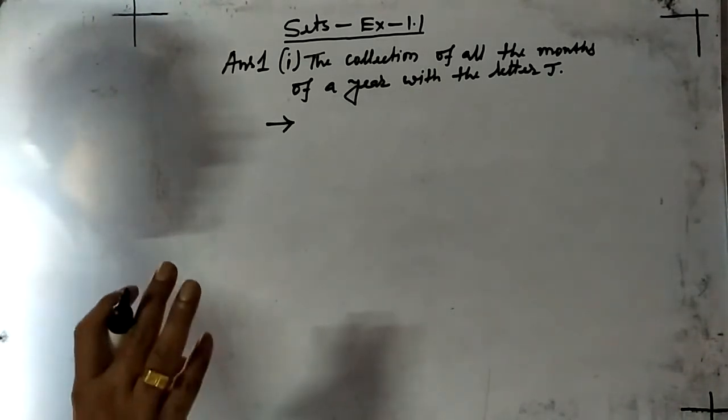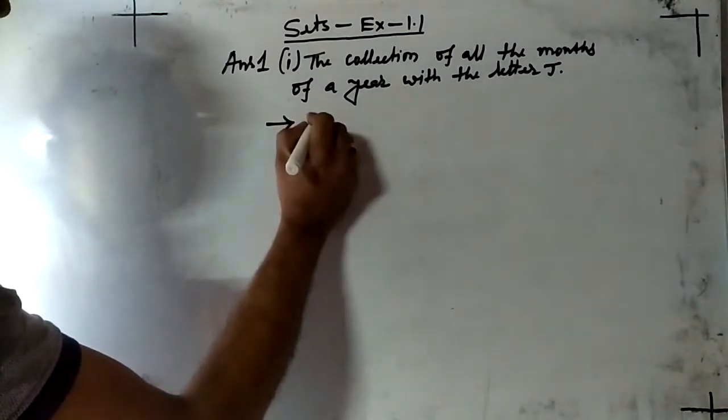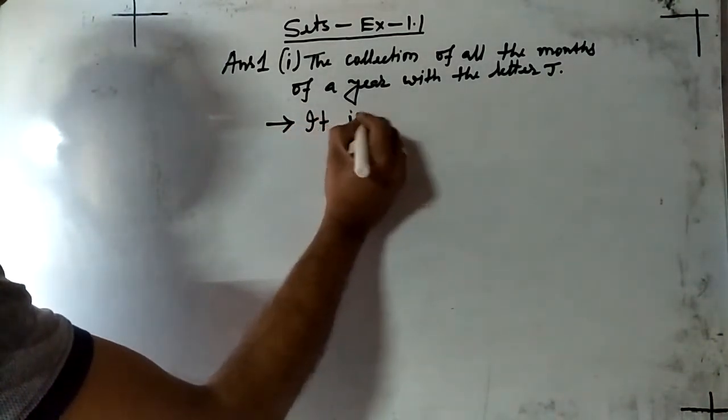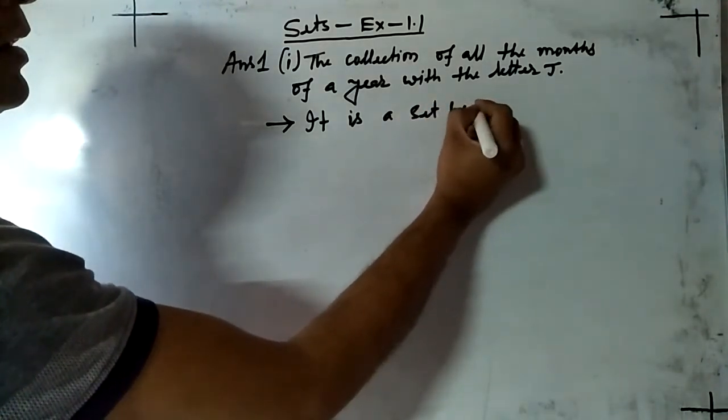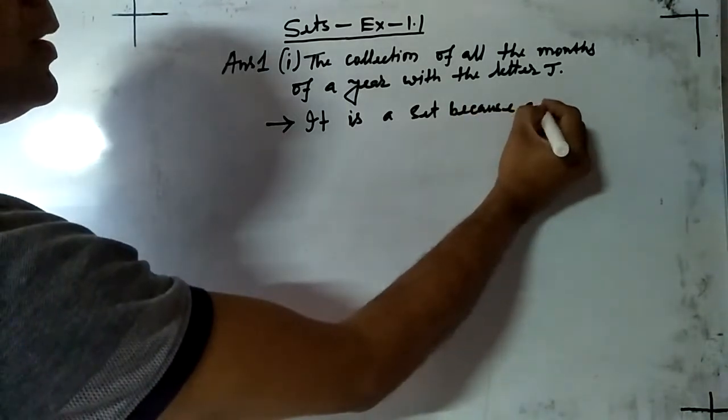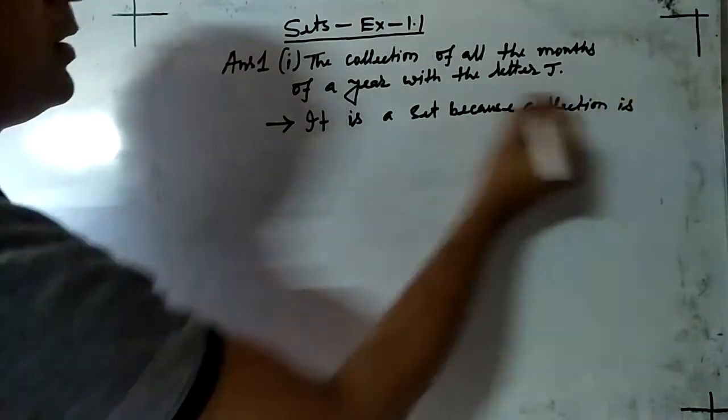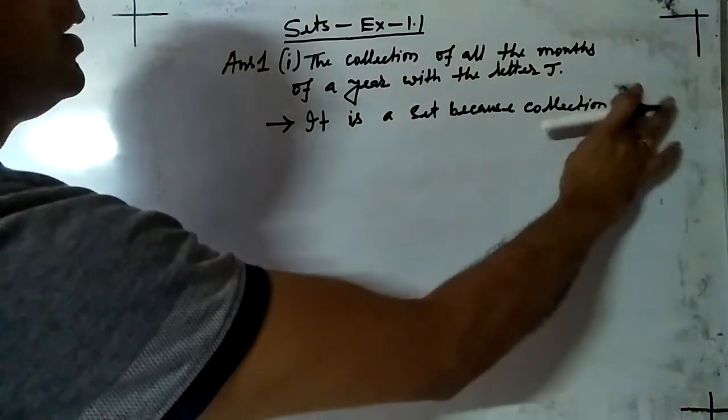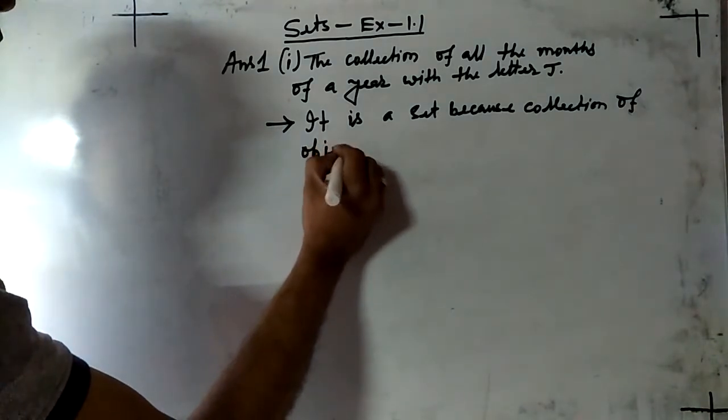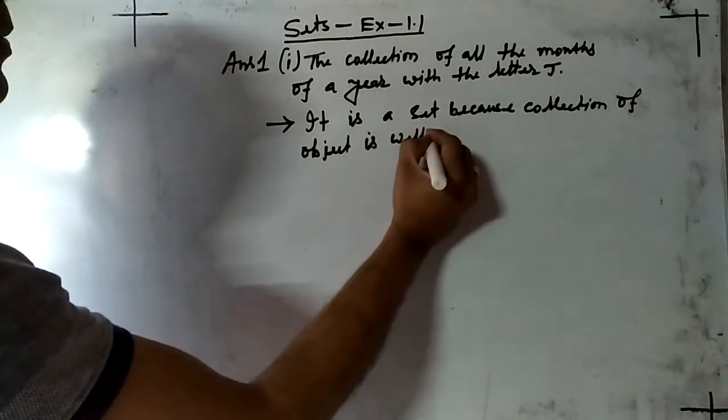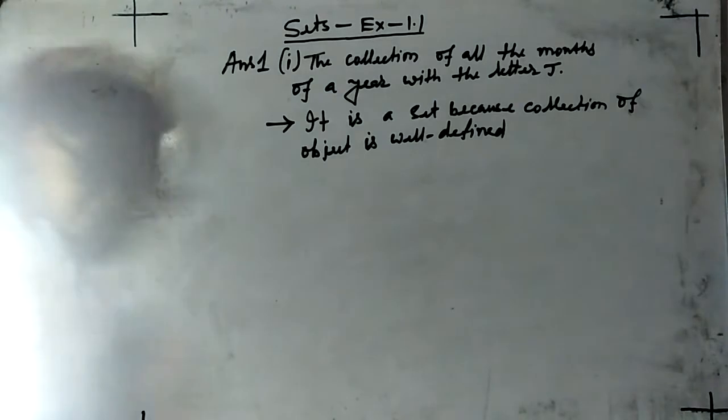That means three months, those months start with letter J, and that collection will be well-defined. So we can say that it is a set because collection of objects is well-defined.